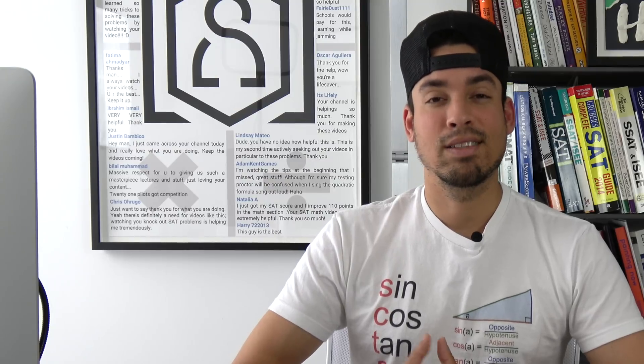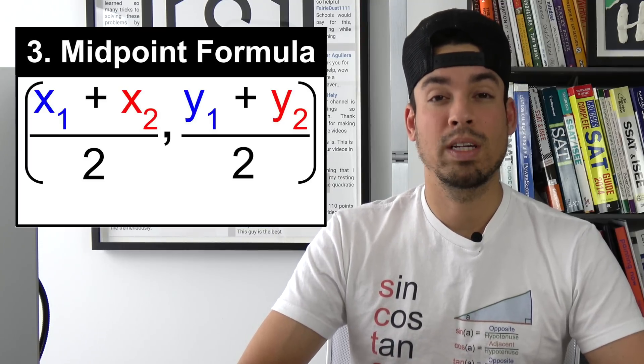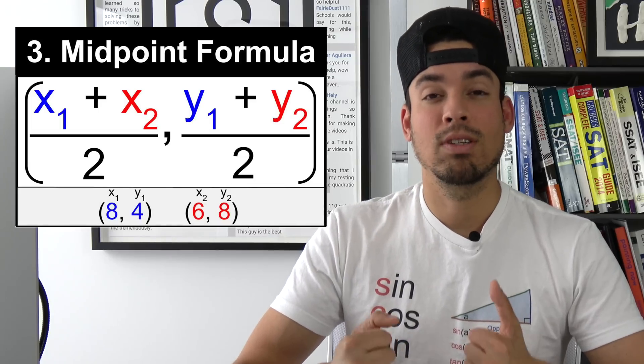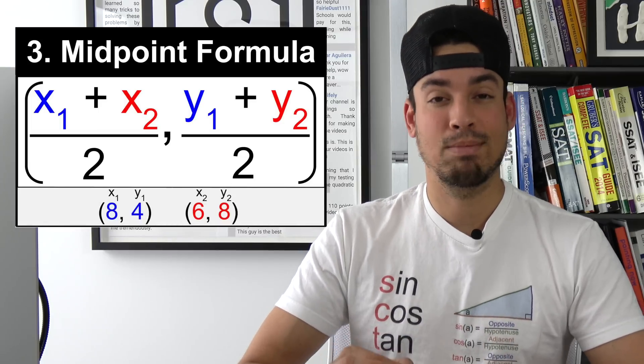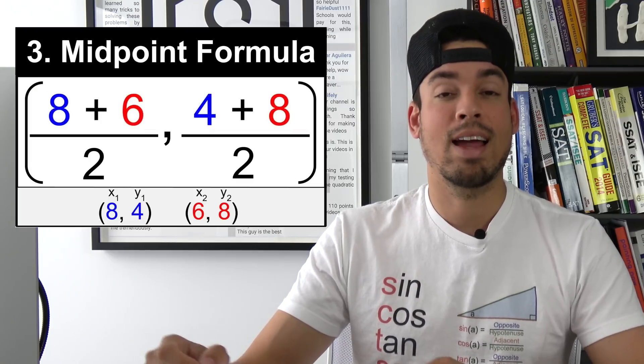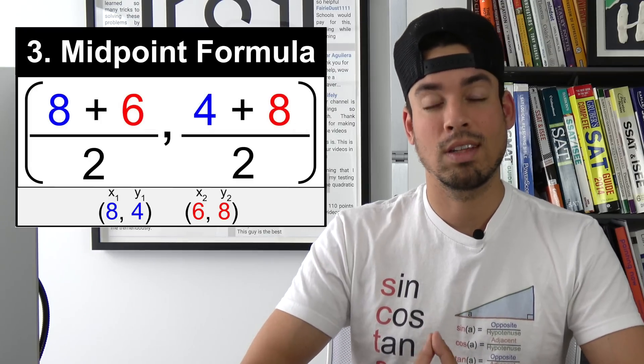Next on the list is the midpoint formula. This will allow you to find the midpoint between two different coordinates. And if you don't remember it you just have to know that midpoint is exactly in between two points. So all you're doing is you're taking the average of the two x values and the average of the two y values and that's it.